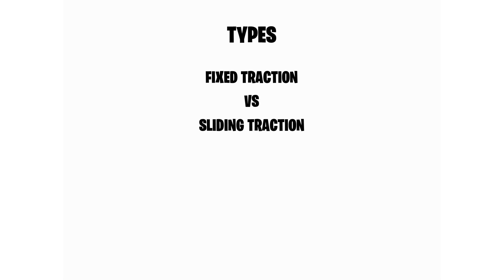There are two types of tractions: fixed traction and sliding traction. These two vary by the type of counter-traction applied. For example, if we use a Thomas splint and apply traction, the counter-traction is provided by the ring of the Thomas splint pressing against the ischial tuberosity of the patient. In sliding traction, the body weight of the patient itself provides the counter-traction — this is achieved by elevating the foot end of the patient's bed. This is the key difference between fixed traction and sliding traction.